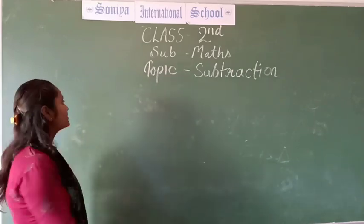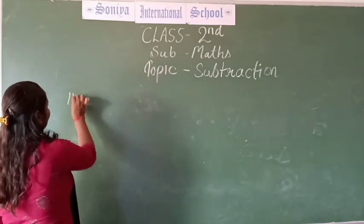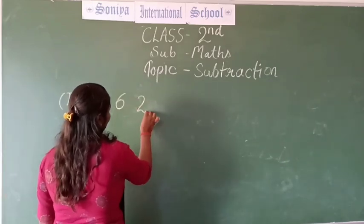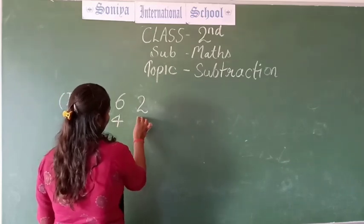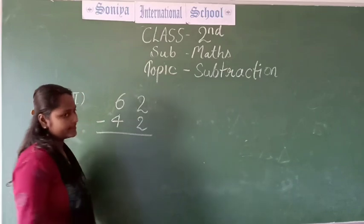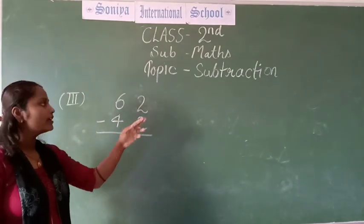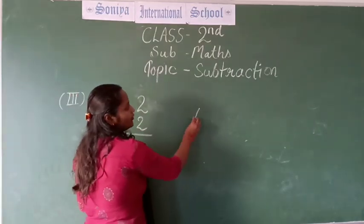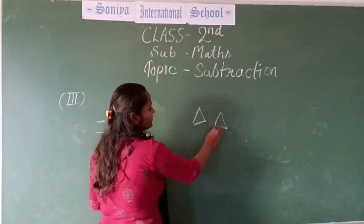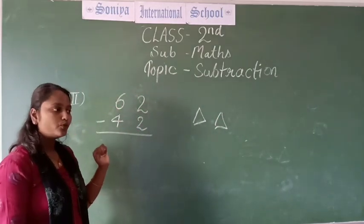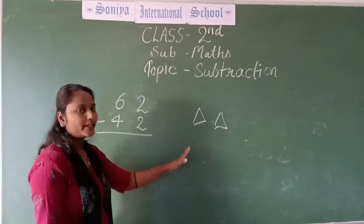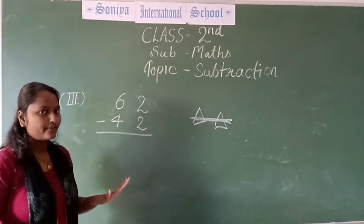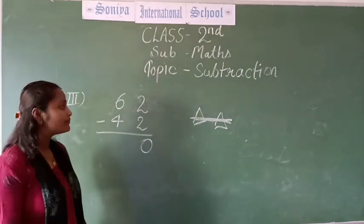Now the third example. See this. Here we see 2 and here also 2. So what will we do? This is 2, so we make 2 triangles. But this is also 2. So we are taking away these 2 triangles. When the 2 triangles are cut away, there is nothing left. That's why we write 0 here.